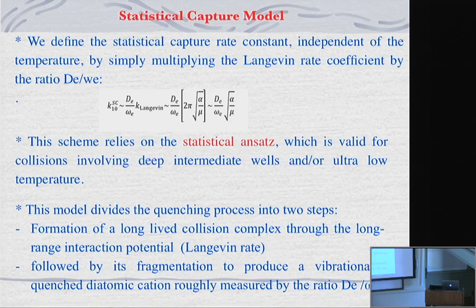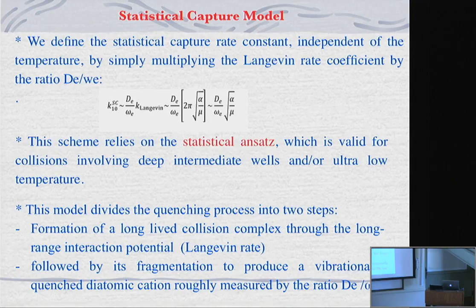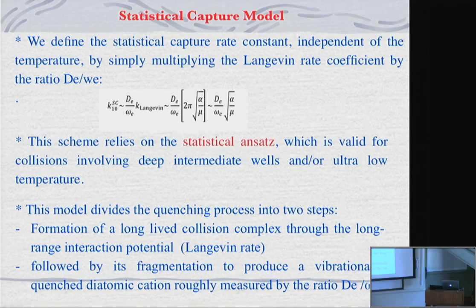The first step is capture to form the complex, and redistribution is then done inside the complex. We multiply by the ratio D over omega E. This scheme relies on a statistical Langevin approach, which is valid for collisions involving a deep intermediate well at ultra-low temperature. We divide the process into steps.